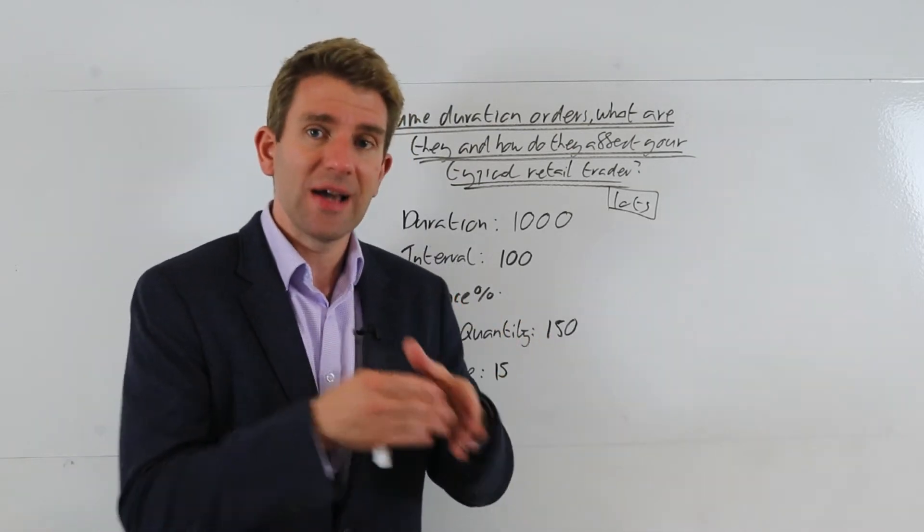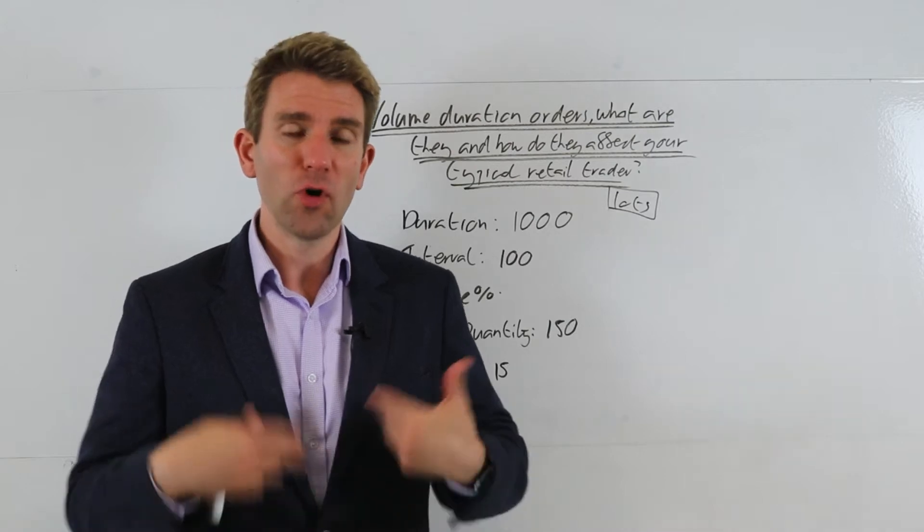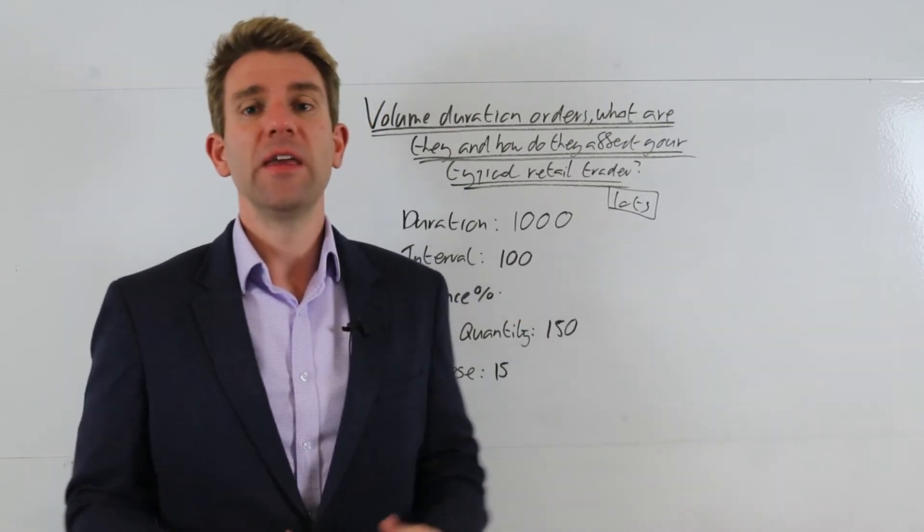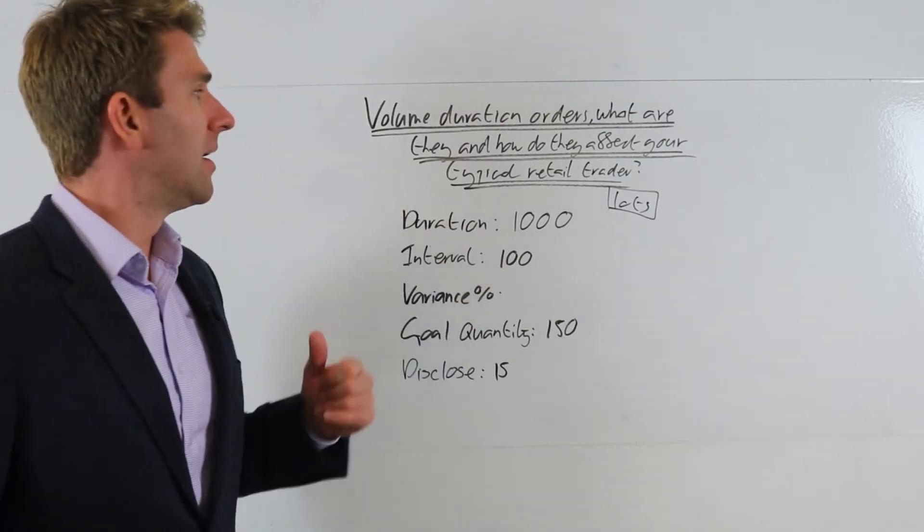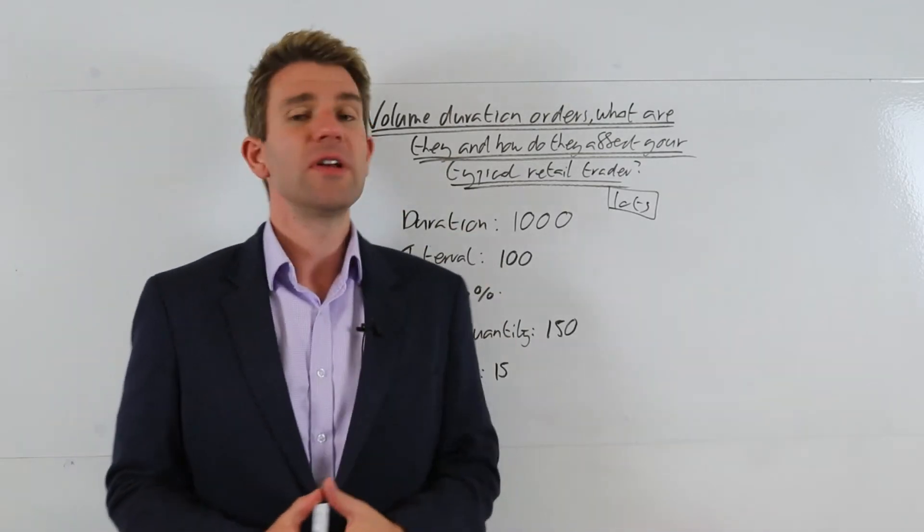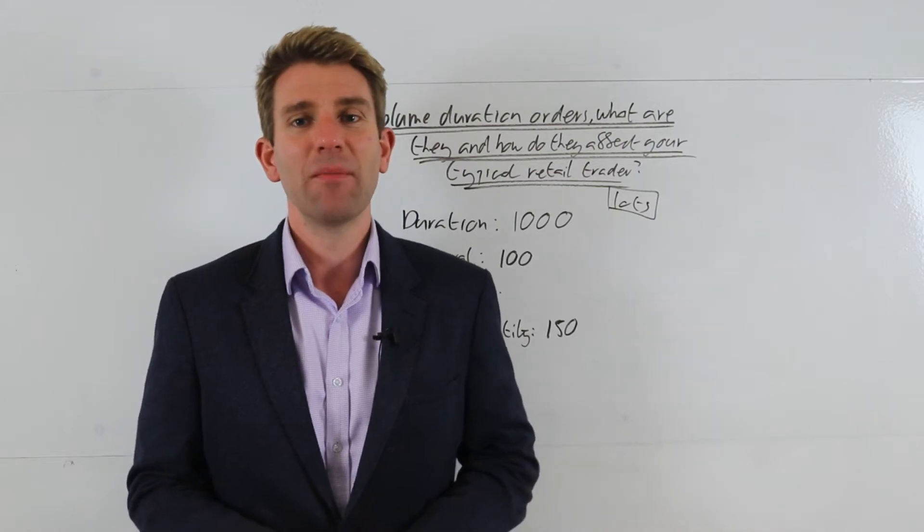The point is, it's sliced up into a percentage of the volume that's come through the order book. All right guys, that is volume duration orders - what are they and how do they affect your typical retail trader? Keep your risk managed. I'll see you in the next one. Take care, bye.